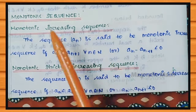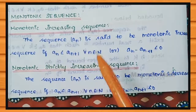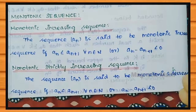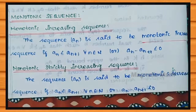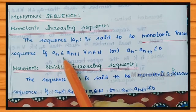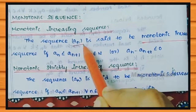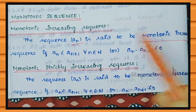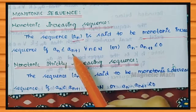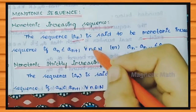First, Monotonic Increasing Sequence. A sequence An is said to be Monotonic Increasing if An is less than or equal to An plus 1, for all n belonging to the natural numbers.